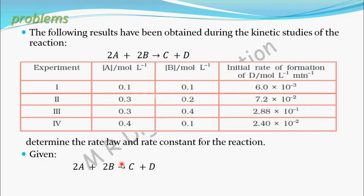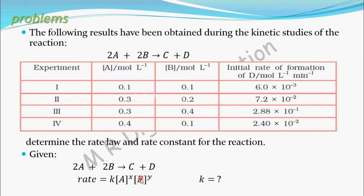To find the rate law, you can write: rate = k × [A]^x × [B]^y, where x is the order with respect to A and y is the order with respect to B. In order to find the rate law, you have to find k, x, and y.